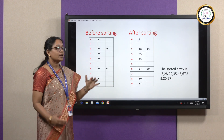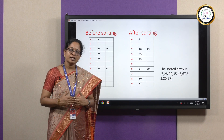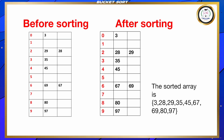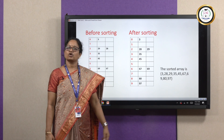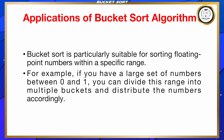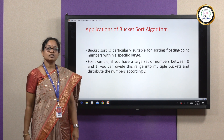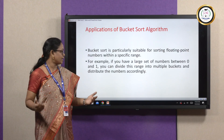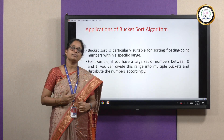Now we concatenate all the rows and write the sorted array. The sorted array is: 3, 28, 29, 35, 45, 67, 69, 80, and 97. So here we get the sorted list. Bucket sort is particularly suitable for sorting floating point numbers within a specific range. If you have a large set of numbers between 0 and 1, you can divide this range into multiple buckets and the numbers can be distributed.